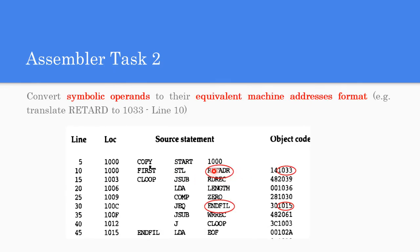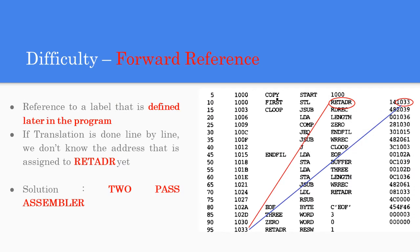The second task is converting symbolic operands. Symbols like RETADR, ENDFIL, and RDREC are symbolic operands that get converted to their equivalent object code address — for example, RETADR is converted to address 1033. However, there is a difficulty with this step known as the forward reference problem: when translating line by line, the assembler encounters a label like RETADR that is defined later in the program and does not yet know its address.